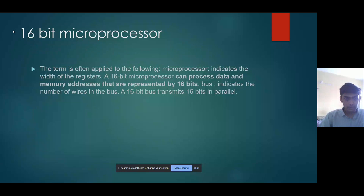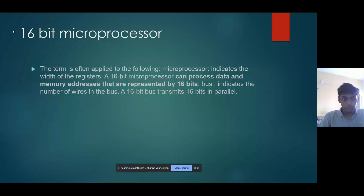The 8086 microprocessor is an enhanced version of the 8085 microprocessor, designed by Intel in 1976. It is a 16-bit microprocessor having 20 address lines and 16 data lines, providing up to 1 MB of storage. It consists of a powerful instruction set which provides operations like multiplication and division easily.